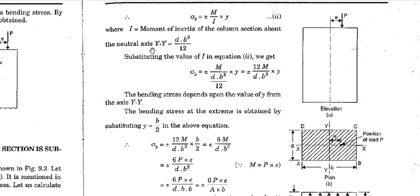For the yy axis, the moment of inertia is I = db³/12. The reason is that d is the smaller dimension here. Substituting this value of I into M/I × y, after simplification σ_b becomes 12M/(db³) × y. This is our generalized equation. The bending stress depends upon the value of y; all other factors — force, eccentricity, and dimensions — are constant, so y is the varying parameter.